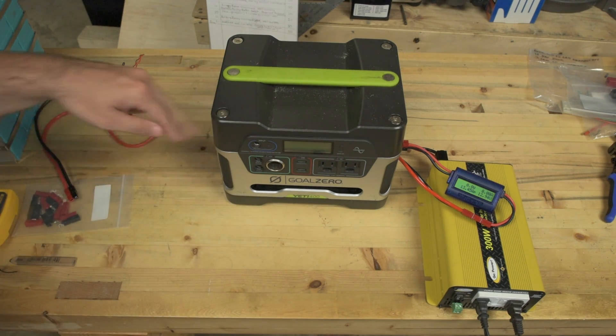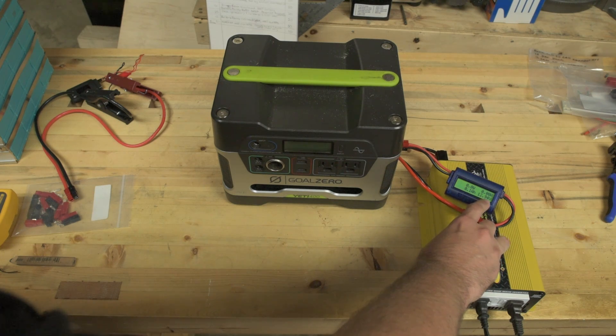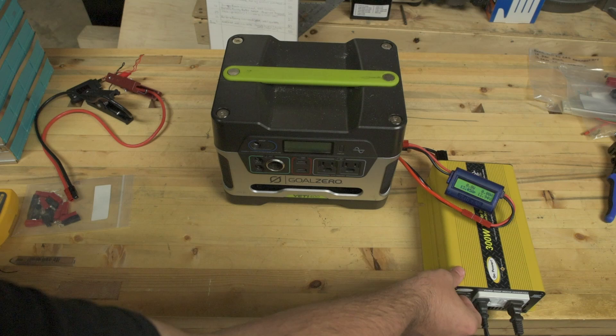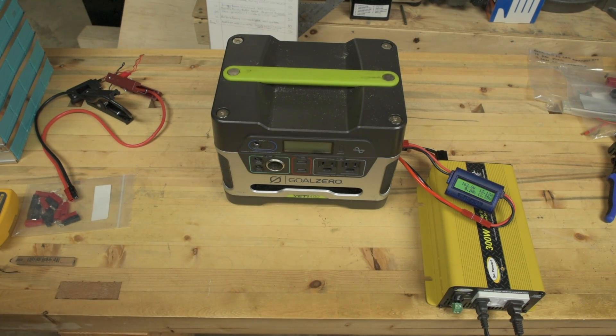It's hooked up to the Anderson port on the side, currently at 12.94 volts. We'll turn on our inverter and two light bulbs for about 160 watts draw - there we go, 163 watts. I'll set a timer on my phone to disconnect after about an hour.